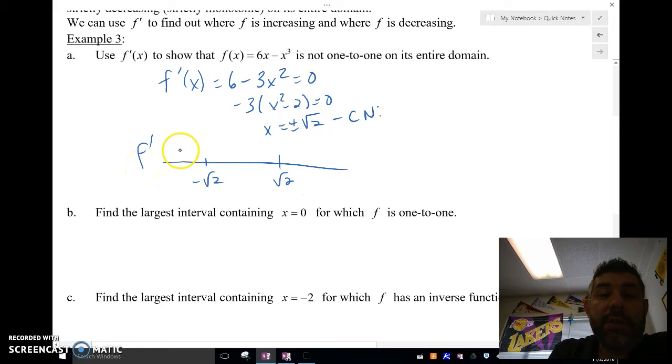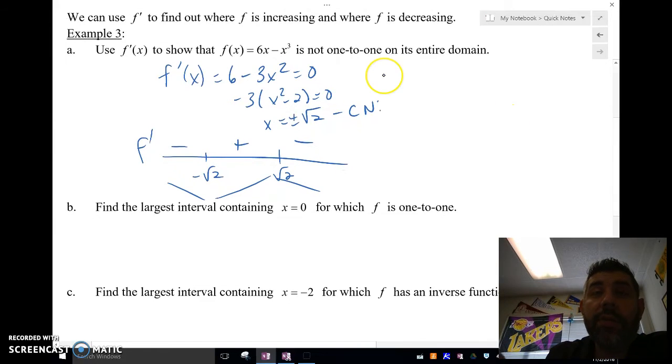So then I'm going to check this out on a number line. And when I plug these in, I'm going to get negative, positive, and negative. So it's going to decrease, increase, and decrease. So already we know that it's not monotonic.